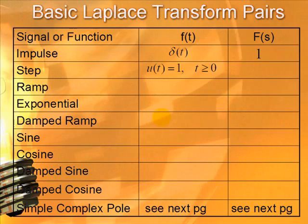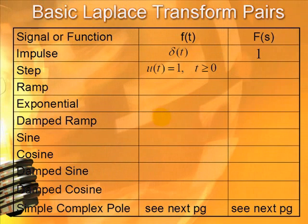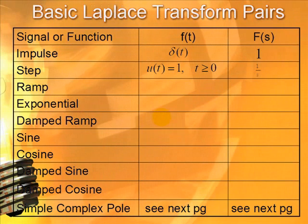Now, the step only occurs for t greater than or equal to zero in this case. So, we have a unit amplitude one, and its corresponding Laplace transform that we saw as one over s.